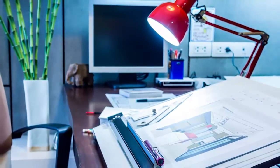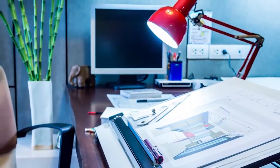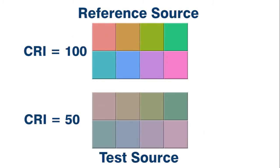The reference source has a CRI of 100. The testing method evaluates the light source's ability to render eight standard pastel colors. The difference between the light reflected by the reference source and the light reflected by the test source provides the numeric CRI value.